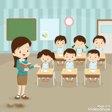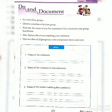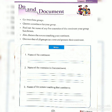I hope you understand today's topic. Now I have planned to give you an activity. Refer to your concept book on page number 117 and answer the following questions. Get into three groups and choose a continent for your group. Find out the names of any five countries of the continent your group has chosen. Also, discuss the oceans touching your continent. One member of each group can come and present their continent. Answer: name of the continent, name of the countries in that continent, and name of the oceans touching that continent.